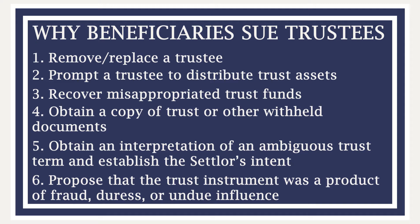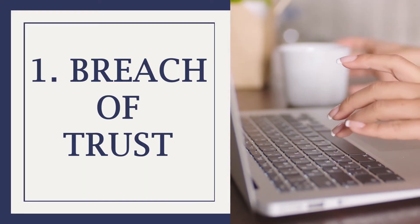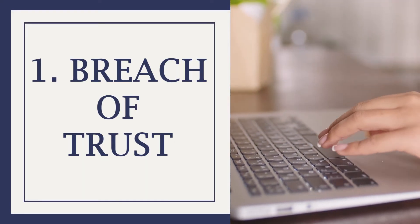If you're wondering if your case is legitimate, here are six common reasons lawsuits have been successfully brought against a trustee. First, breach of trust — this means the trustee is administering the trust in a manner that violates the terms of the trust instrument. For example, if the trust directed that a beneficiary's distribution was to be paid outright, but the trustee is attempting to hold those funds in trust to manage them on behalf of the beneficiary, that would be a breach of trust.